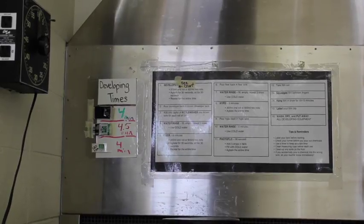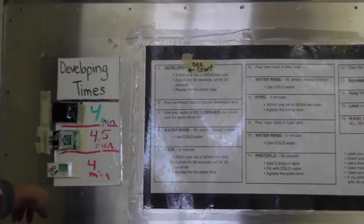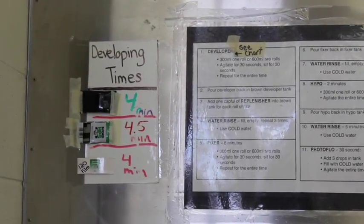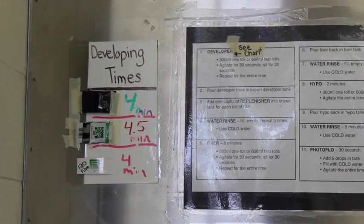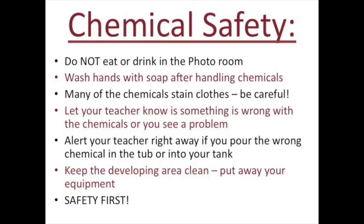Directly next to the chart we have an additional chart for developing times. From time to time you might have a different type of film, especially if you continue on to Photo 2, 3, and AP Studio Art. So that is a good location to go and see what your developing time is.